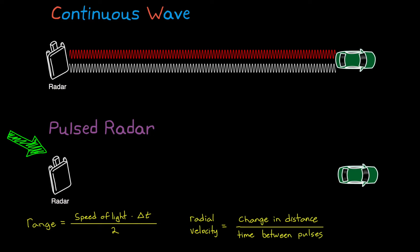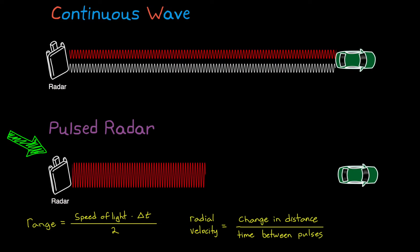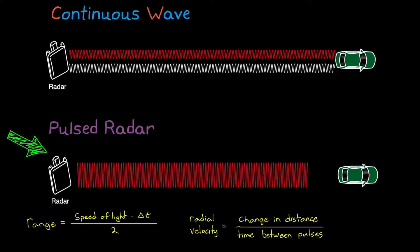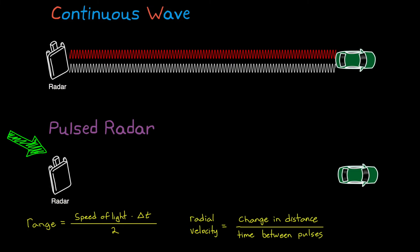And we can measure radial velocity simply by looking at the change in distance between two successive pulses. There are other more complex and more accurate ways to determine these measurements with pulsed radar, but I just wanted you to see that there is a simple and easy to understand solution.